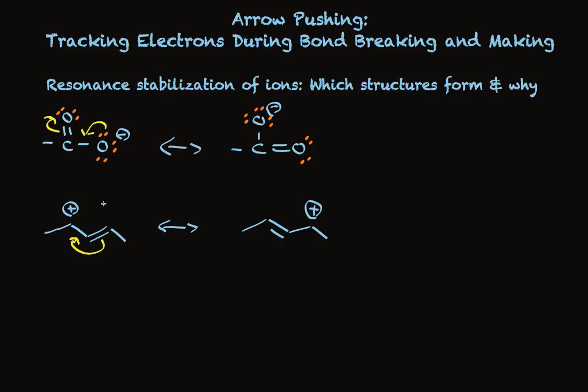Being comfortable with arrow pushing will let you track what's happening with resonance structures and the stabilization of ions, which you're going to find is quite important. For two reasons — analysis of bond making and breaking, and analysis of resonance structures of ions — you're going to find that this Arrow Pushing Convention is very useful and allows us analytical insight to understand what's actually happening.